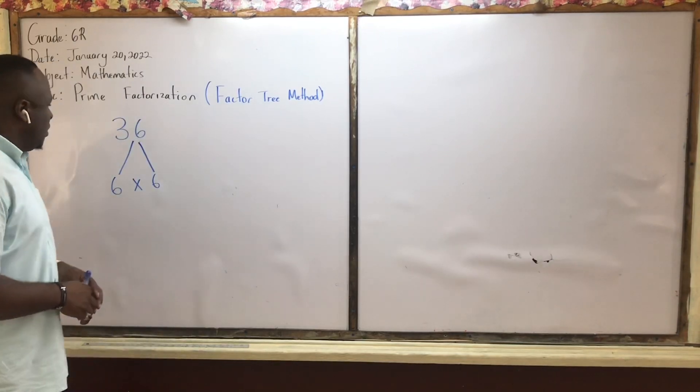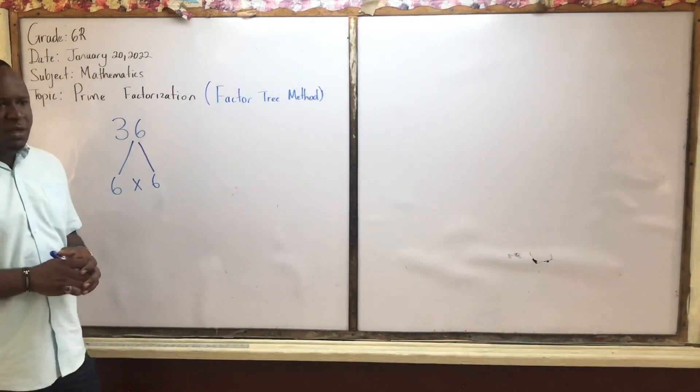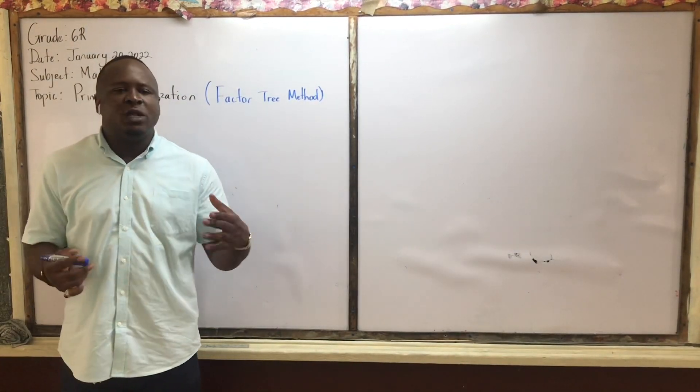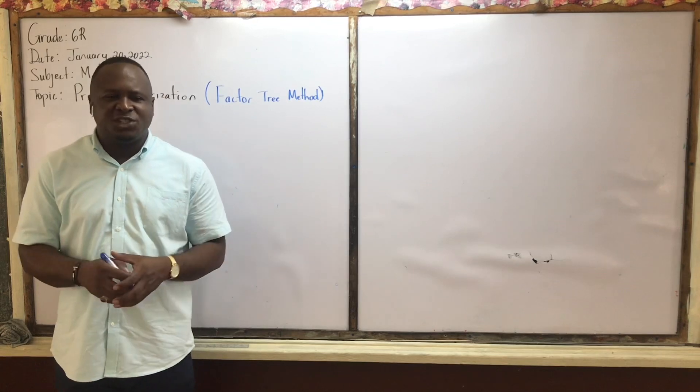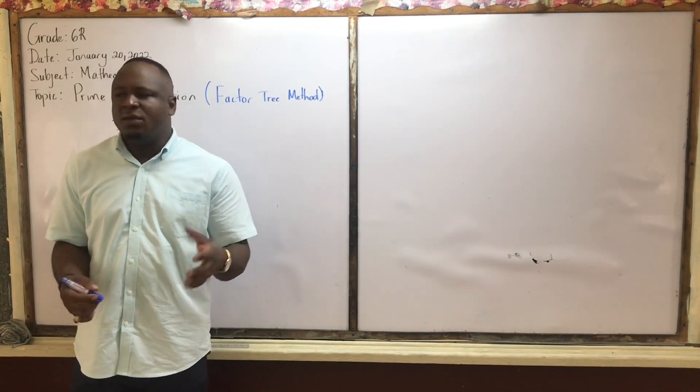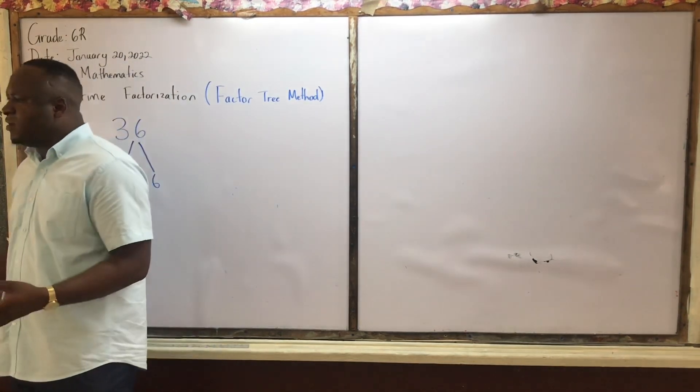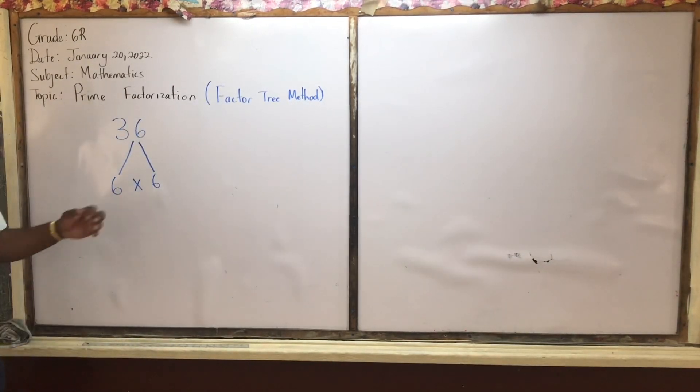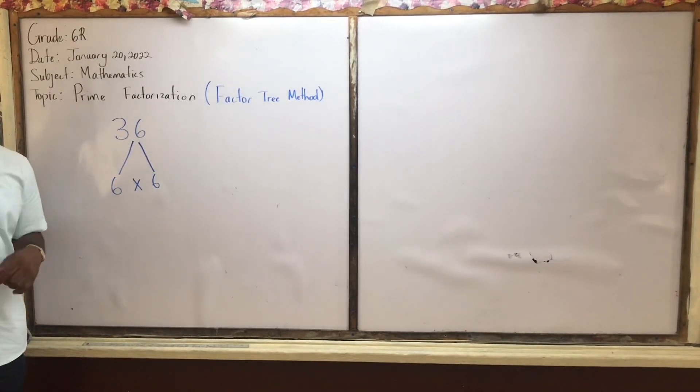Now, when you're using the factor tree method, once you get a prime number, you stop right there. Because the fruit that we are trying to bear from this factor tree is prime numbers. So we are trying to bear prime numbers from the factor tree. Right? So looking at 6 times 6, is 6 a prime number? Make sure you're ready to bear fruit. Right? So we are going to continue.